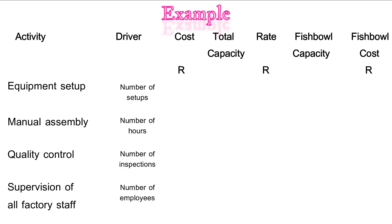We're going to put in the total costs that were allocated to the different activities: 250,000 Rand for equipment setup, 210,100 Rand for manual assembly, 90,000 Rand for quality control and 150,000 Rand for supervision of all factory staff.